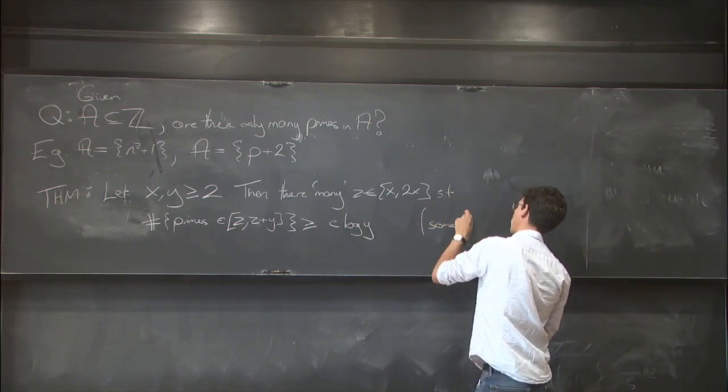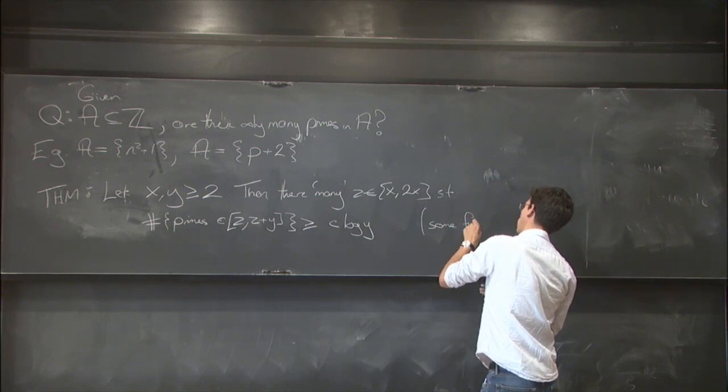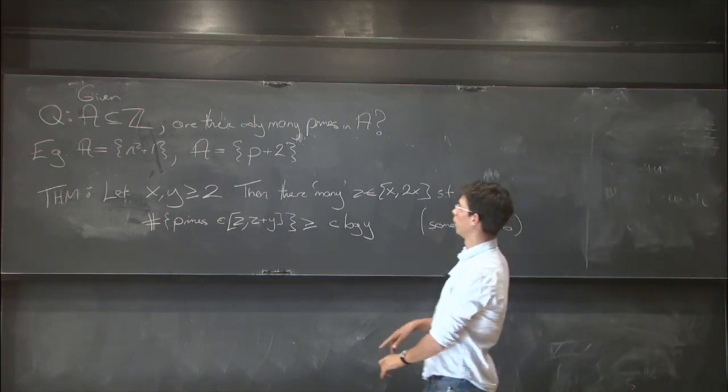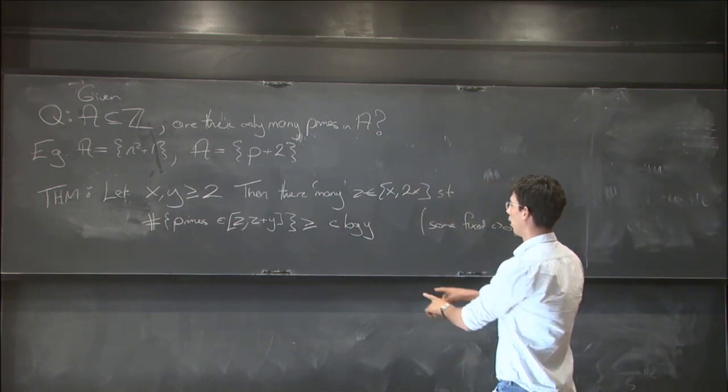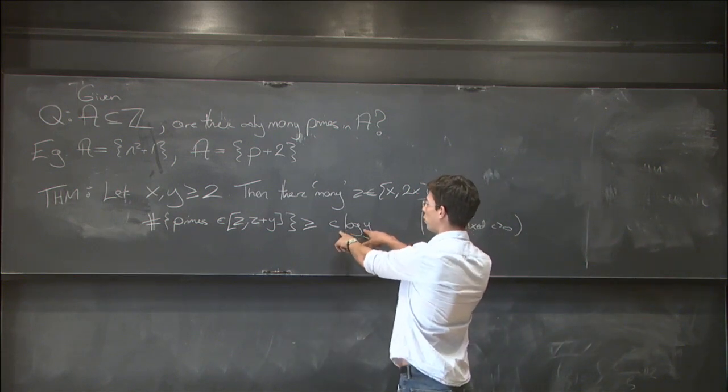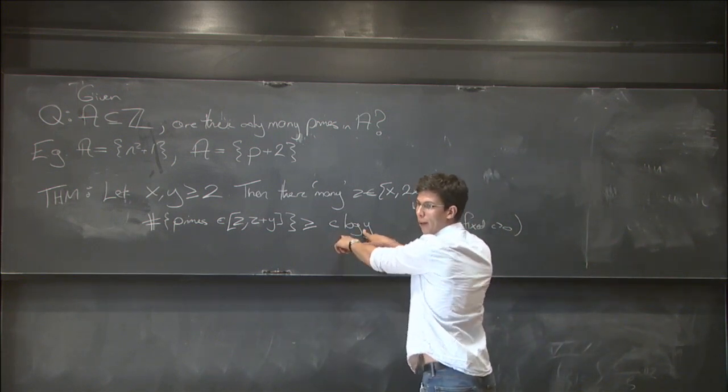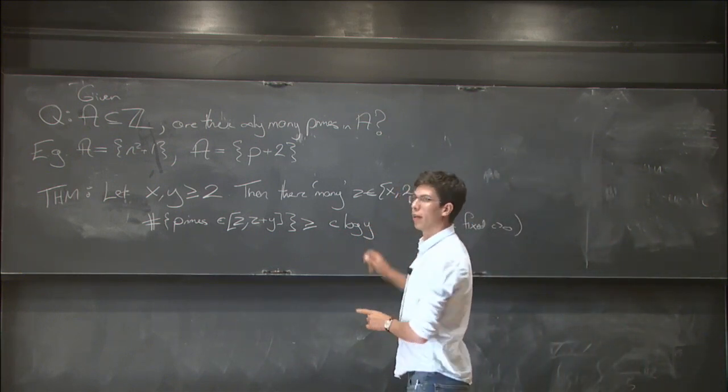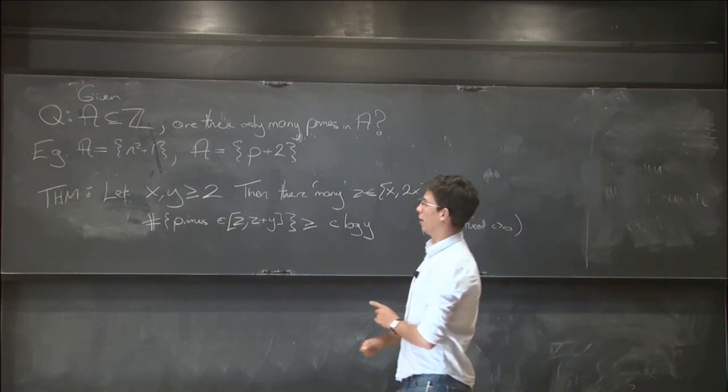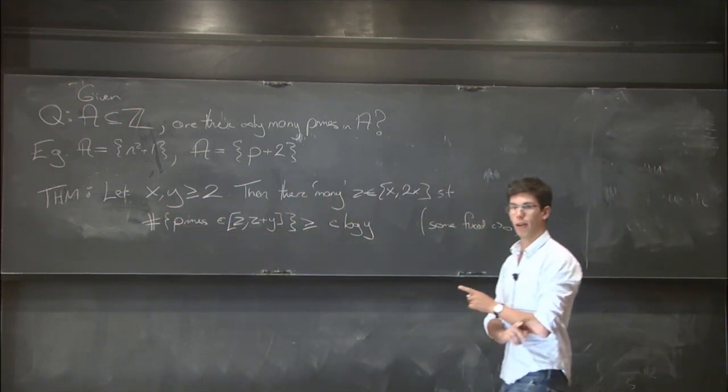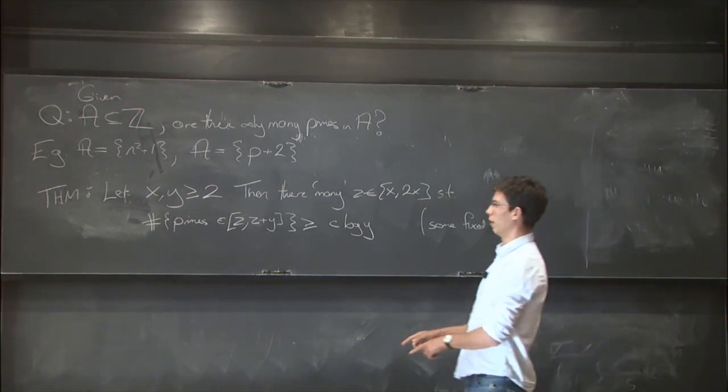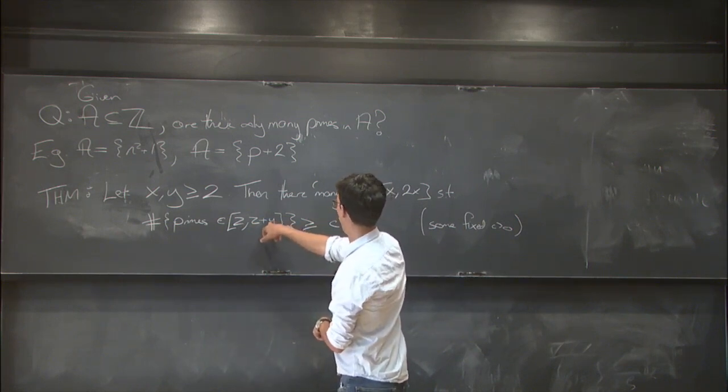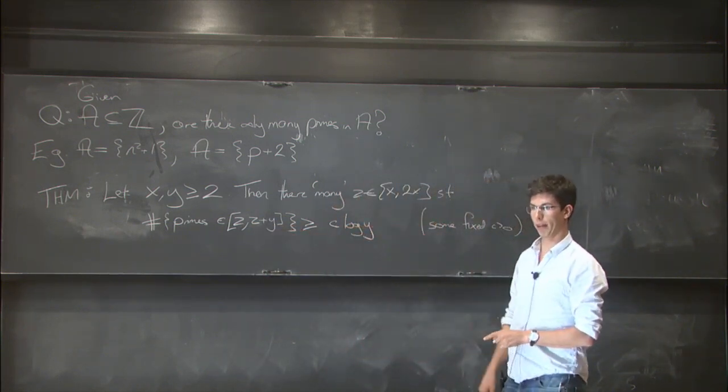So c here is some fixed positive constant. You think of c as 1 over a million. Just to parse this correctly, this theorem is completely trivial when c times log y is less than or equal to 1 by the pigeonhole principle. However, if you take y to be some large constant and then you're thinking of x going off to infinity, this is showing infinitely many bounded gaps between primes. So there's infinitely many pairs of primes that differ by just some bounded amount.